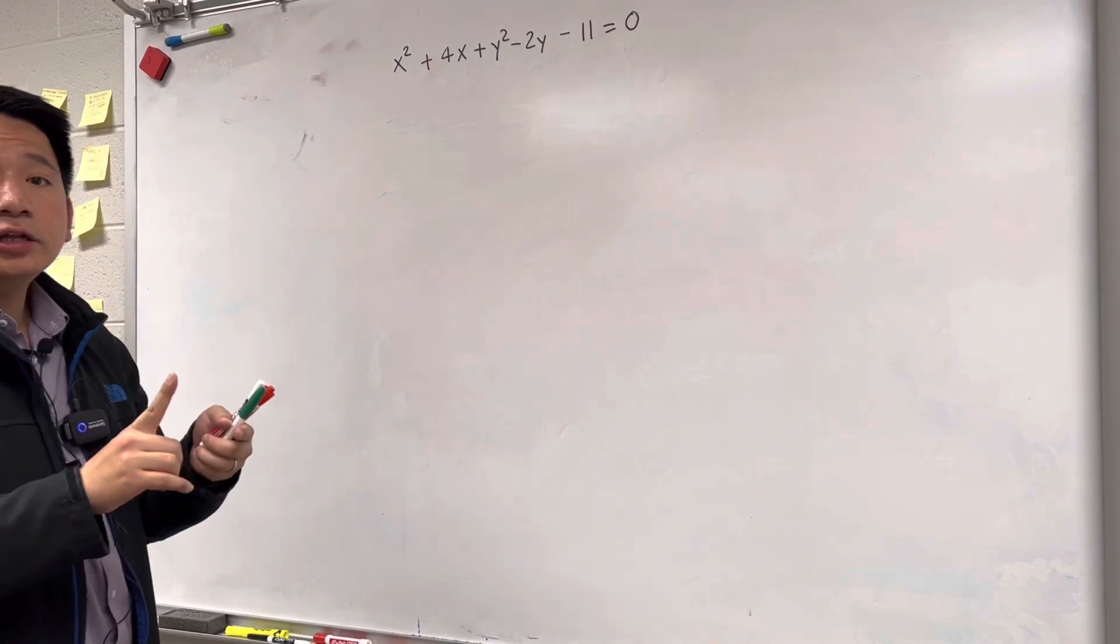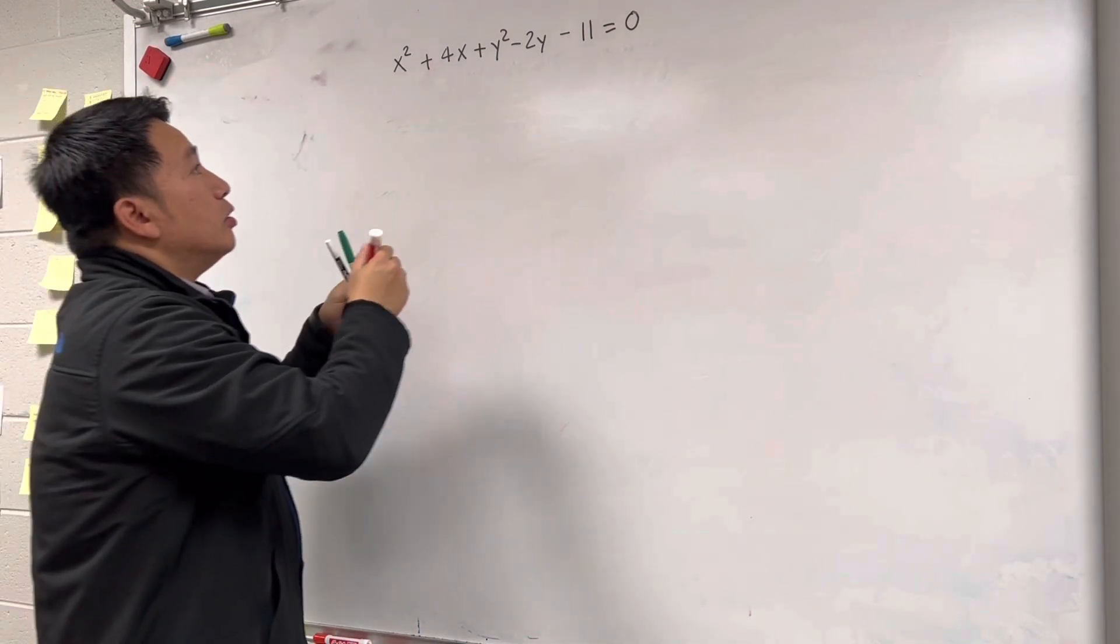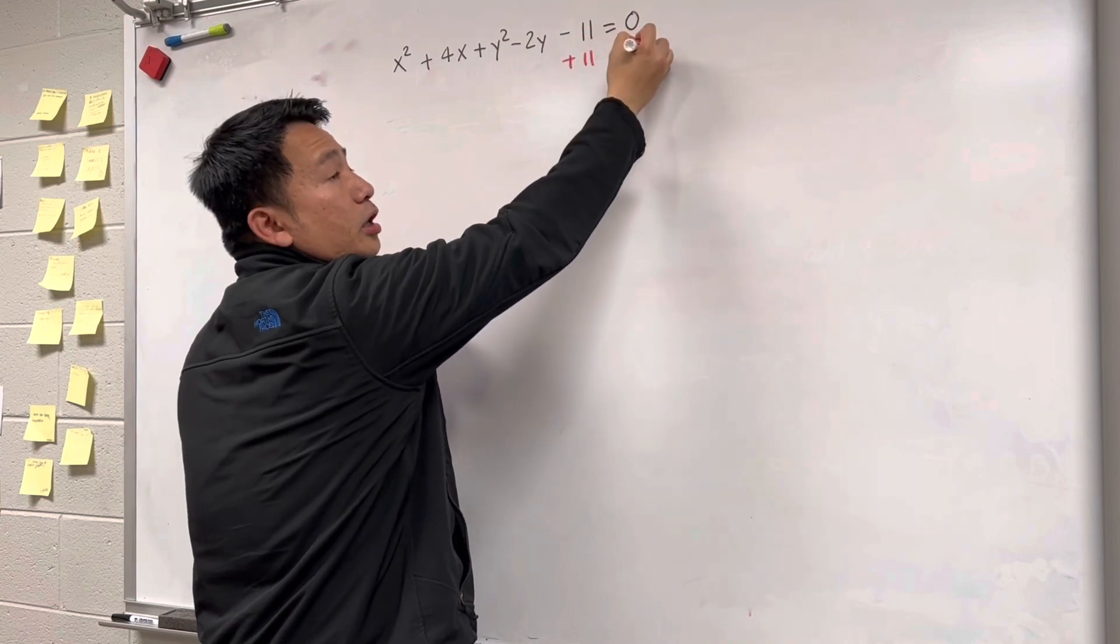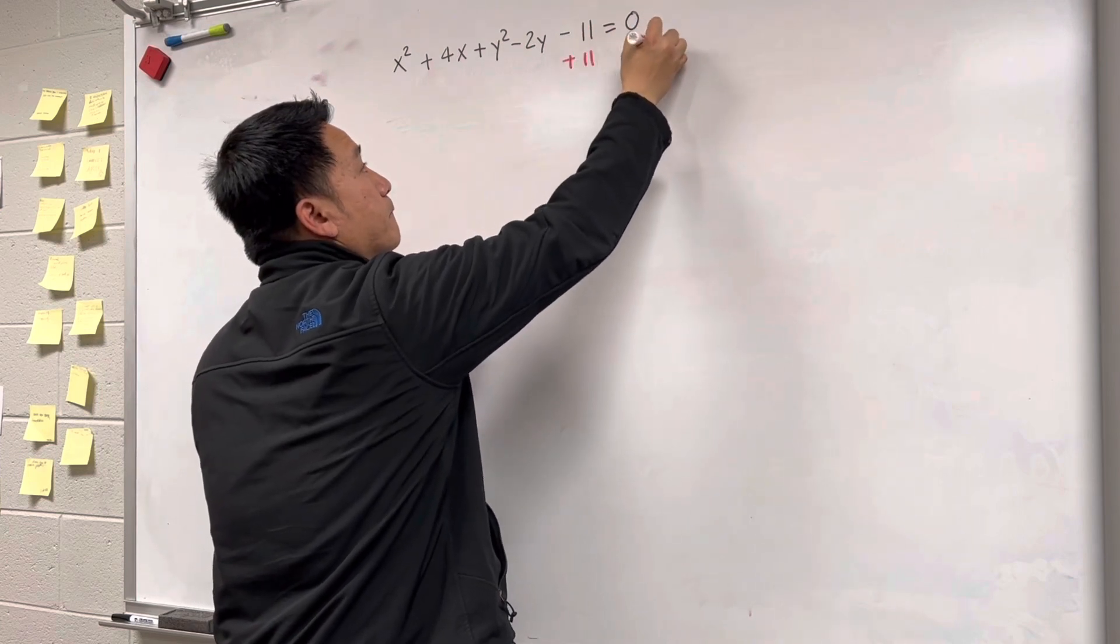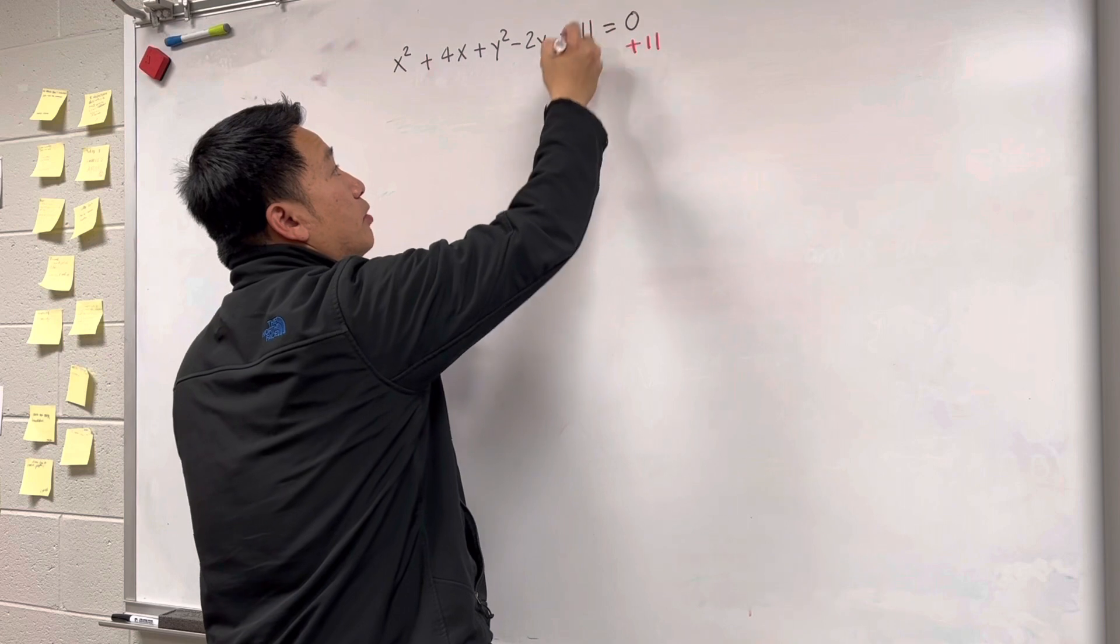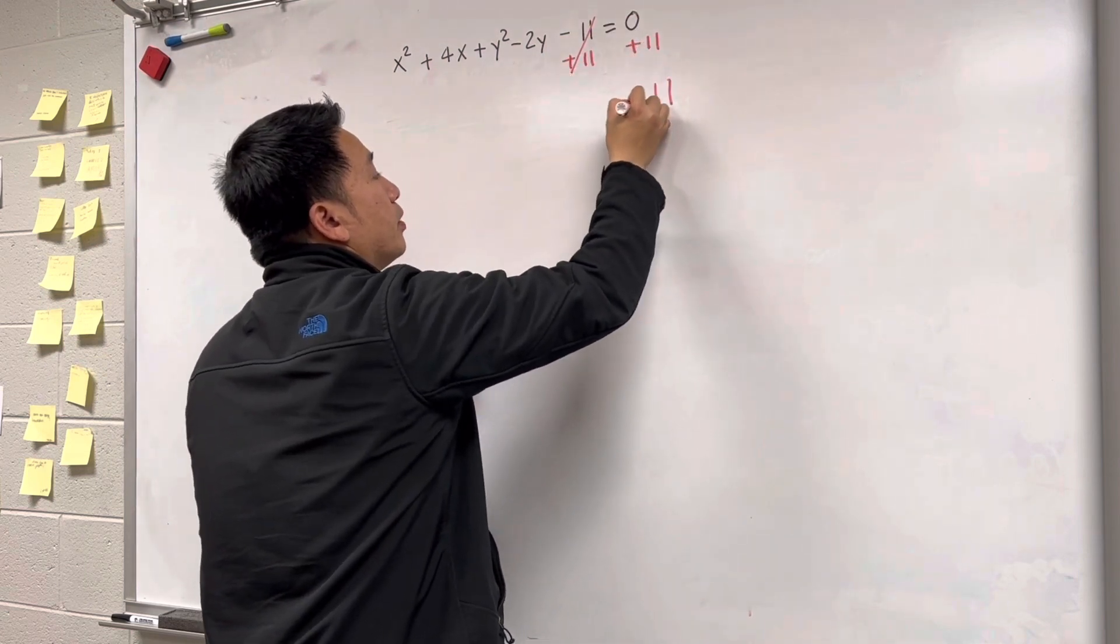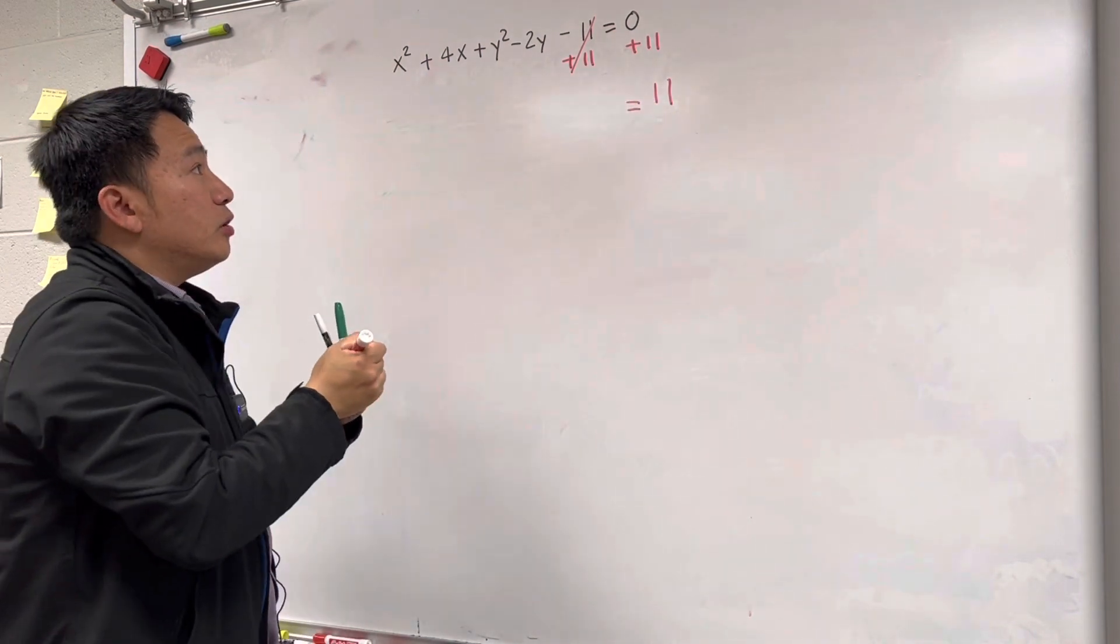Step 1, you need to isolate the number. So we need to add 11 on both sides so we can bring 11 to another side. So minus 11 plus 11, you cancel, right? 0 plus 11, you can bring 11 down.